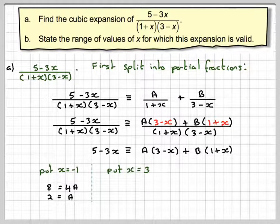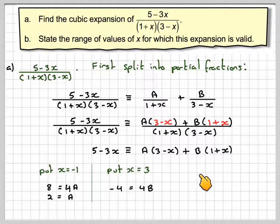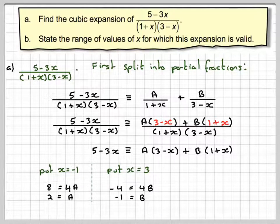And put x is equal to 3, we'll make that 0. So here we're going to get 5 minus 3 times 3 which is minus 4. And here we're going to have 4b, giving me b is minus 1.